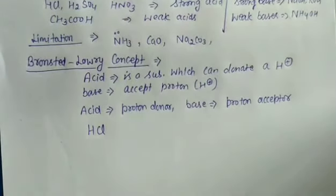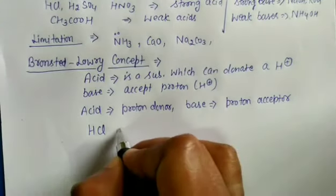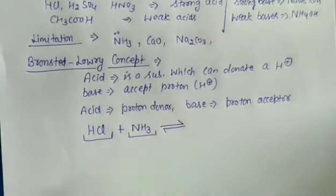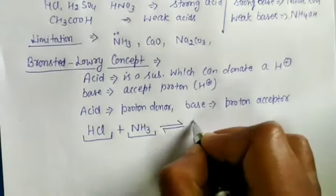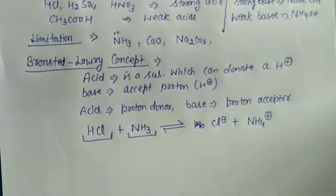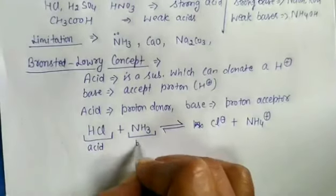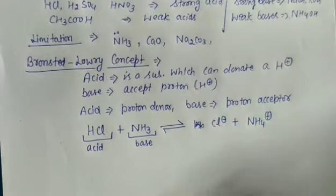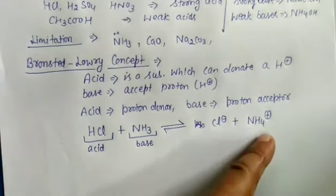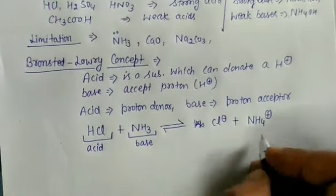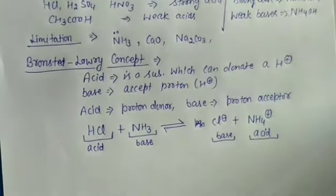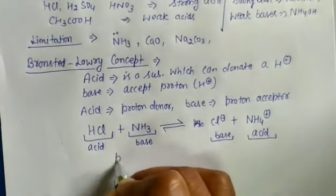For example, when HCl reacts with ammonia, we get chloride ion and ammonium ion. HCl is the Bronsted acid and ammonia is the Bronsted base. On the product side, chloride ion can accept a proton back, so it behaves as a base, and ammonium ion can give a proton, so it behaves as an acid. Acid-base reactions in this concept are simply proton transfer reactions.